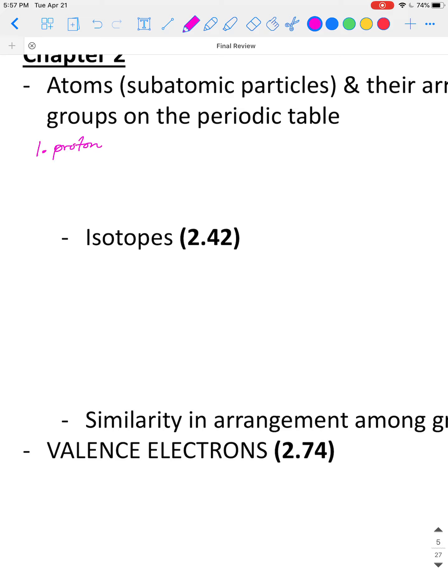So remember for an atom that we have three subatomic particles. The first one is a proton, and it has a positive charge. And we say it weighs about 1 amu, which stands for atomic mass unit. Number two, we have a neutron. It is neutral, no charge. We say it weighs about 1 amu.